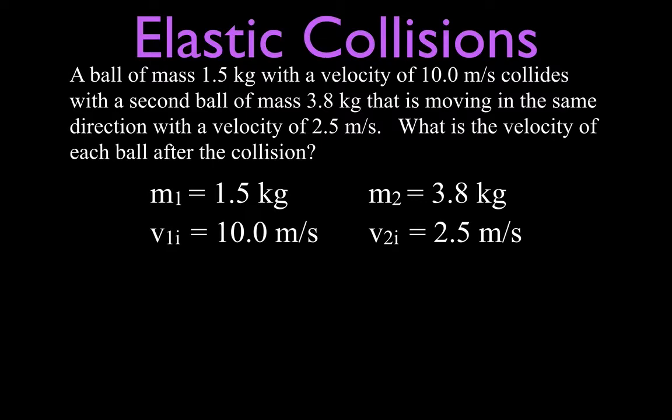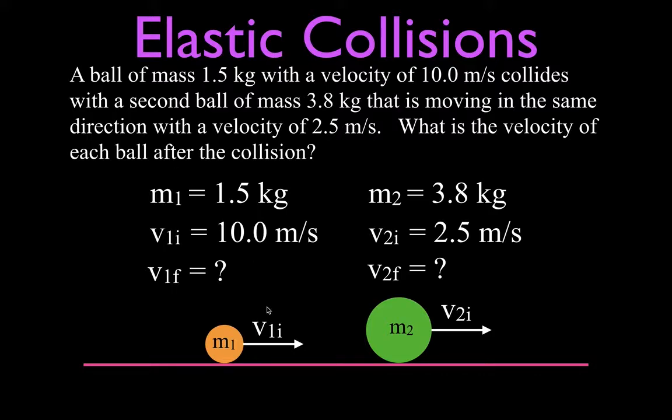And then just for the heck of it I like to just make a quick picture. Just draw a couple of objects and indicate their velocities. You could write the numbers in if you want. I just like to show which way they're going. But they're both going the same direction. This one's going faster so it's going to overtake this one. And of course we want to know what is the final velocity of mass number one.